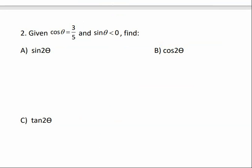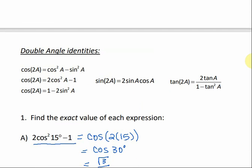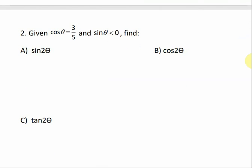In the next example, given that the cosine of theta is 3 fifths and the sine of theta is less than 0 (meaning it's negative), find the sine of 2 theta. In order to find sine of 2 theta, we have cosine and we need sine. Looking at the double angle identities, we need both sine and cosine in the identity for sine of 2a. So we need to find what sine of theta is first.